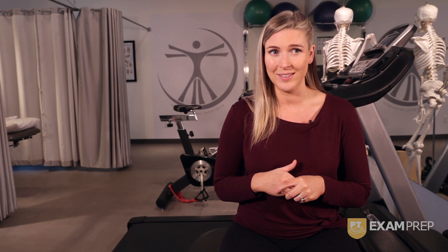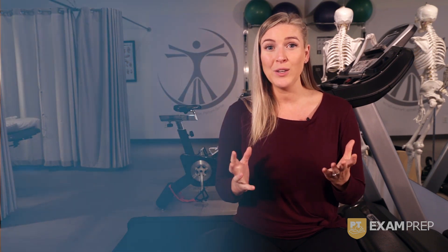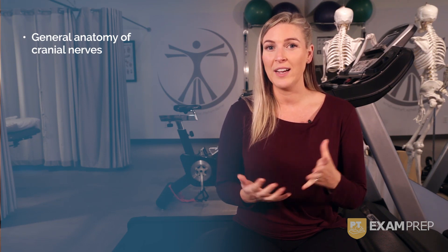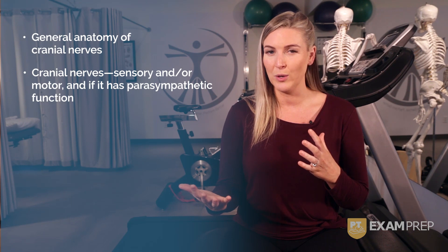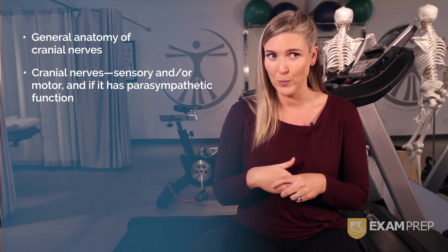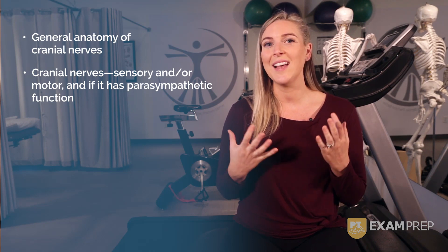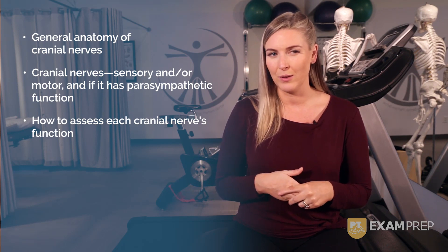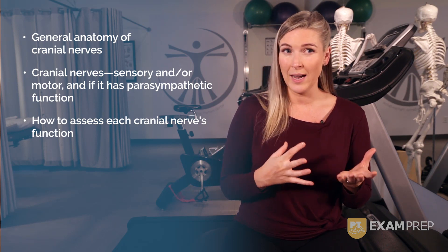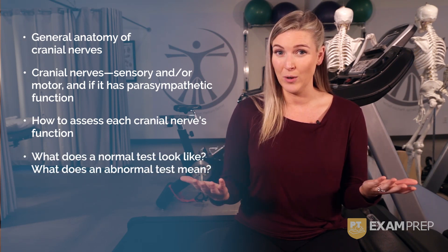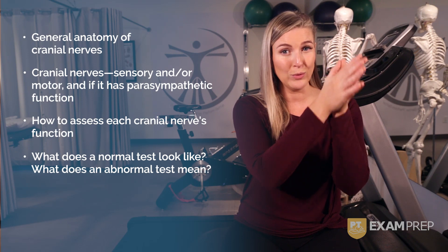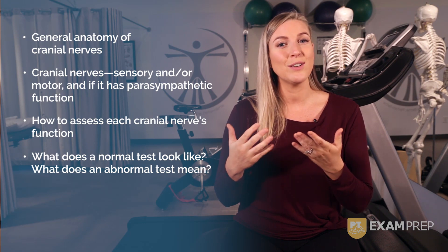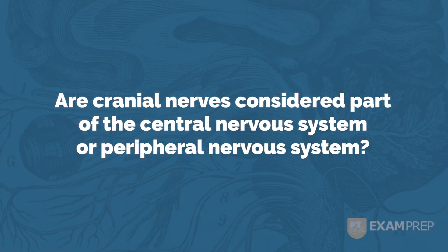There are a few things you absolutely have to know to get these stations right. Number one, you need to know the general anatomy of cranial nerves. Number two, you need to know whether each cranial nerve has sensory or motor components, and also whether it has sympathetic or parasympathetic components. Next, you need to know how to assess each cranial nerve — this is more for the practical exam but could appear on the written. You also need to know what a normal test looks like versus what an abnormal result means, how to perform the test, how to interpret the results, and the unique characteristics of each cranial nerve.